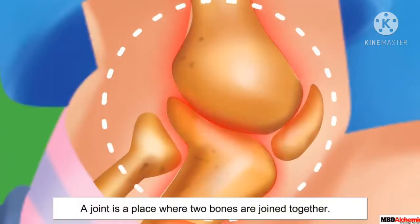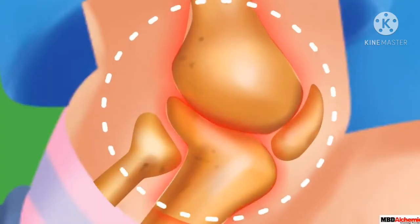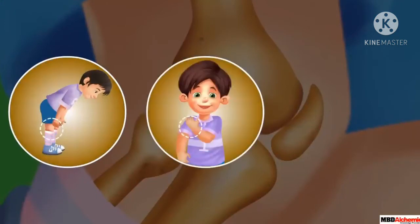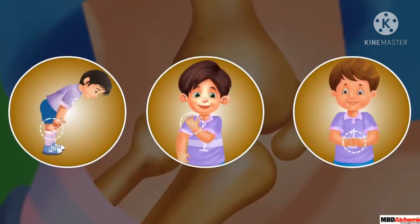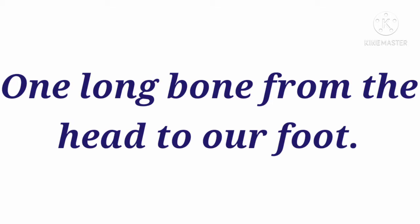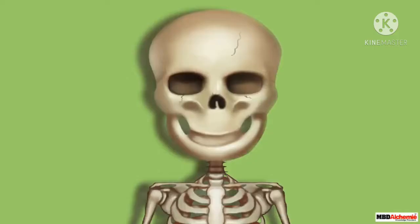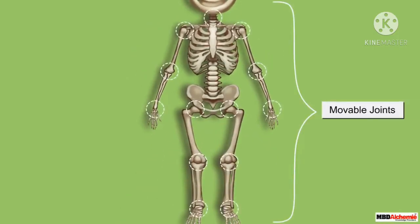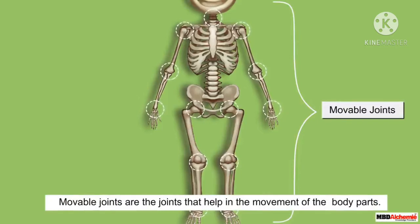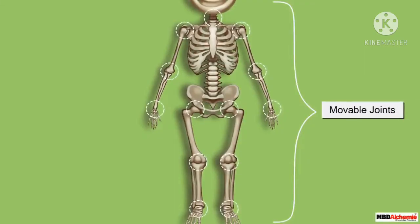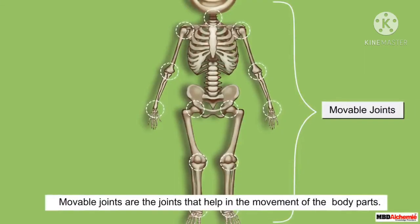Bones are very strong. We cannot bend them. Then how do we bend our legs, hands, and other parts of our body? Our body is not made up of one long bone from head to foot. Our body consists of 206 bones, and these bones are joined at the joints and form a skeletal system. We bend or move our body only at these points where the bones meet, and this point where bones meet is the joint.